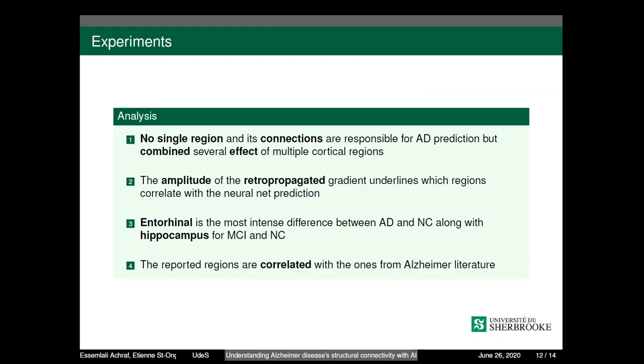For the experiment and our findings, we found that no single region and its connections are responsible for AD prediction, but combined several effects of meta-cortical regions. Also, the amplitude of the retro-propagated gradient and the regions which correlate with the neural network prediction. Like, entorhinal is the most intense difference between AD and NC, along with hippocampus for MCI and NC. The reported regions are correlated with the ones from the literature and neuroanatomist expert review.